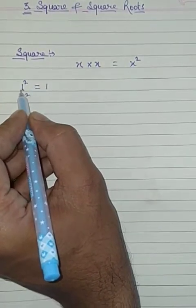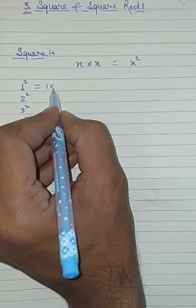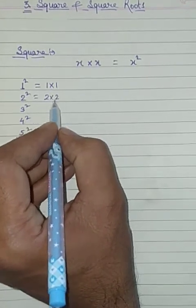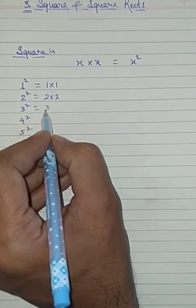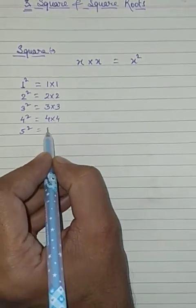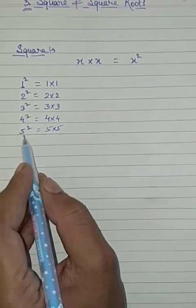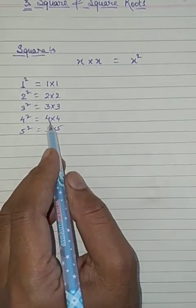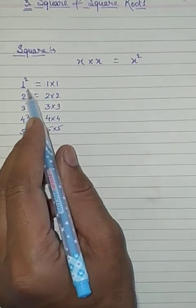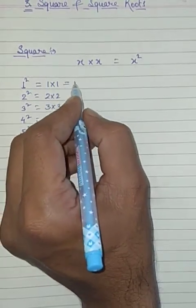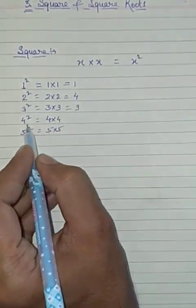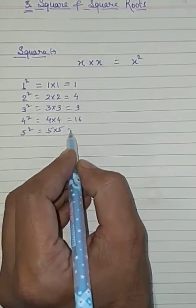We call it the same number multiplied by itself. So what do we get? 1 square is 1×1=1, 2 square is 2×2=4, 3 square is 3×3=9, 4 square is 4×4=16, 5 square is 5×5=25.